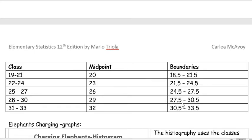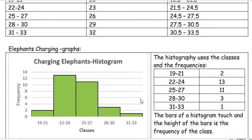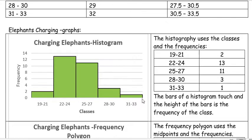Now we're going to use some of that information to make graphs or look at our elephant data in a different way. The first one I'm looking at is a histogram. In a histogram, the bars touch and the height of the bars is the frequency of the class.